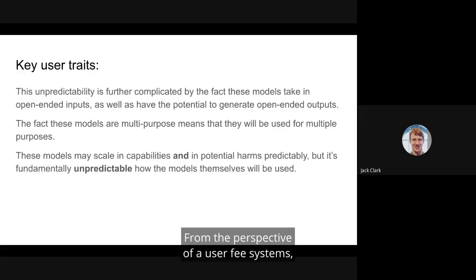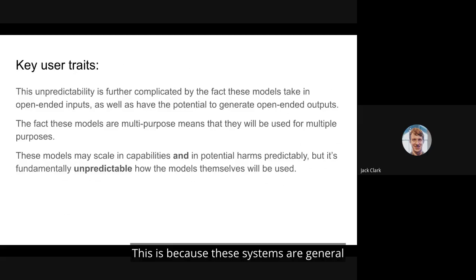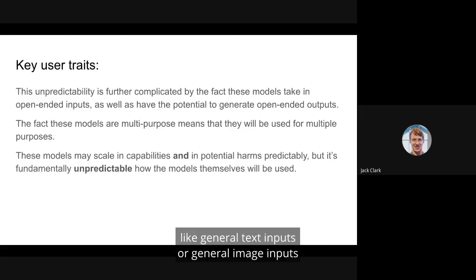From the perspective of a user of these systems, the properties are important. They mean that users will put in open-ended inputs into these systems, and the systems will generate open-ended outputs. This is because these systems are general, and they have general interfaces, like general text inputs or general image inputs. And the fact that these models are so useful for so many purposes means we can't predict all of the ways in which a person is going to use these models.